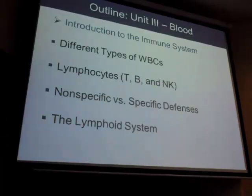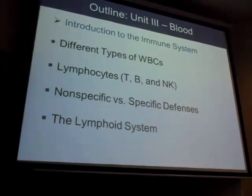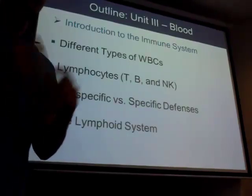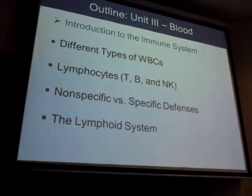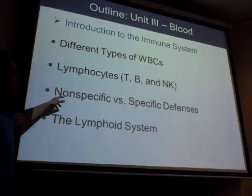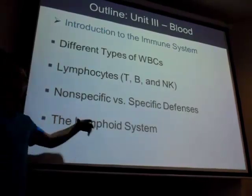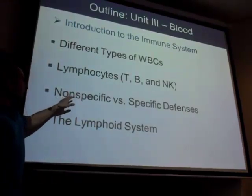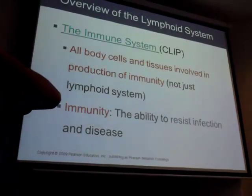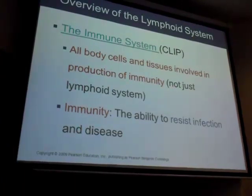WBCs — white blood cells. We finished red blood cells and platelets, so now we're on white blood cells. There are five types, and on the flow chart all the way at the bottom, five of the seven cells are white blood cells. The word for white blood cells is leukocytes — hence leukemia. There are specific defenses and nonspecific defenses. A specific defense attacks something specifically, like targeting one flu strain.